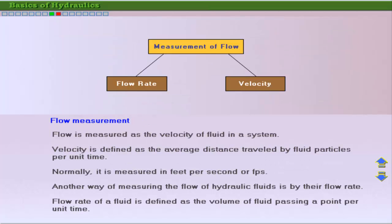Flow may be measured as the velocity of the hydraulic fluid through the conveyors in a system. Velocity is defined as the average distance traveled by the fluid particles per unit time. It is normally measured in feet per second, or FPS, through conveyors.